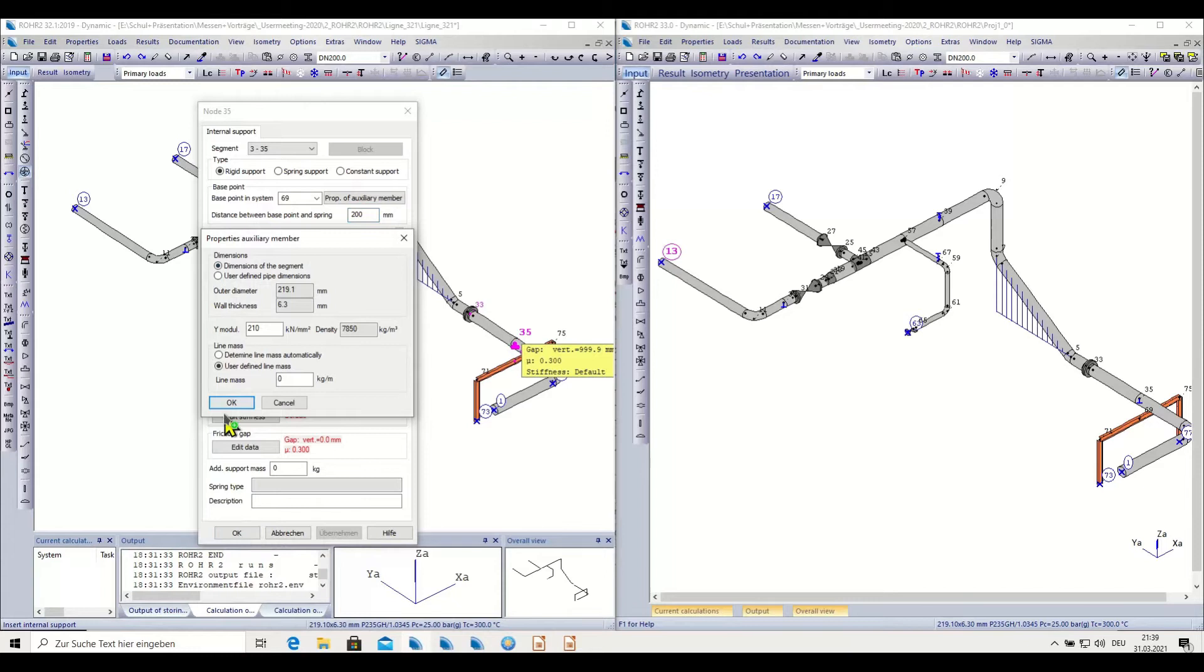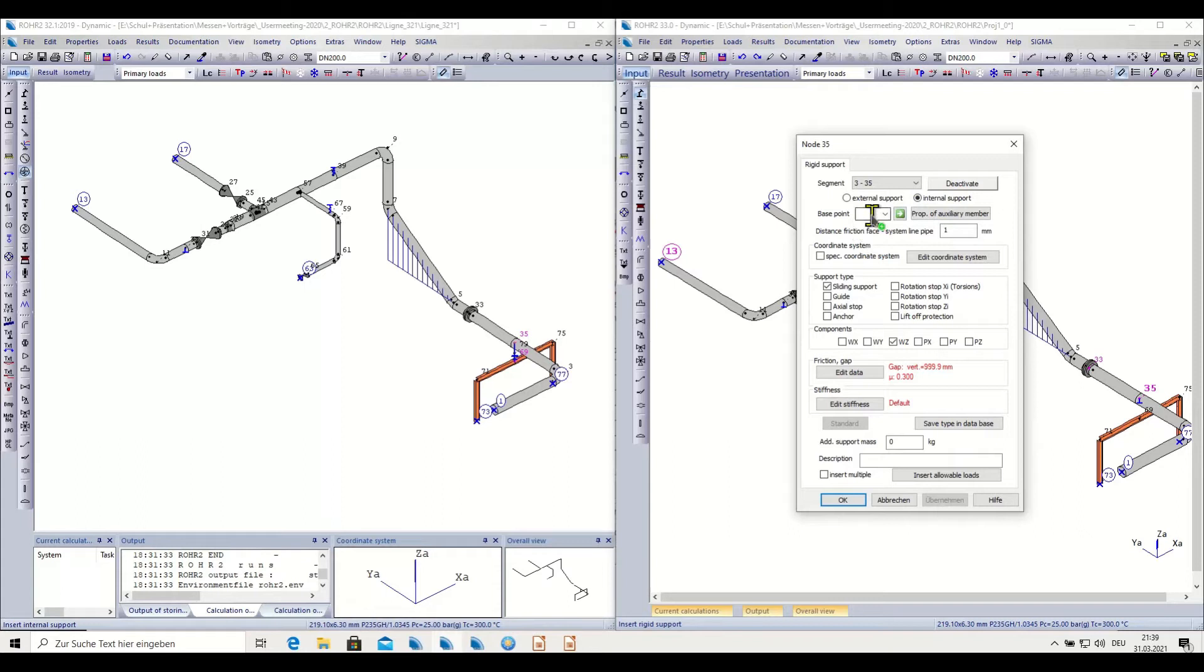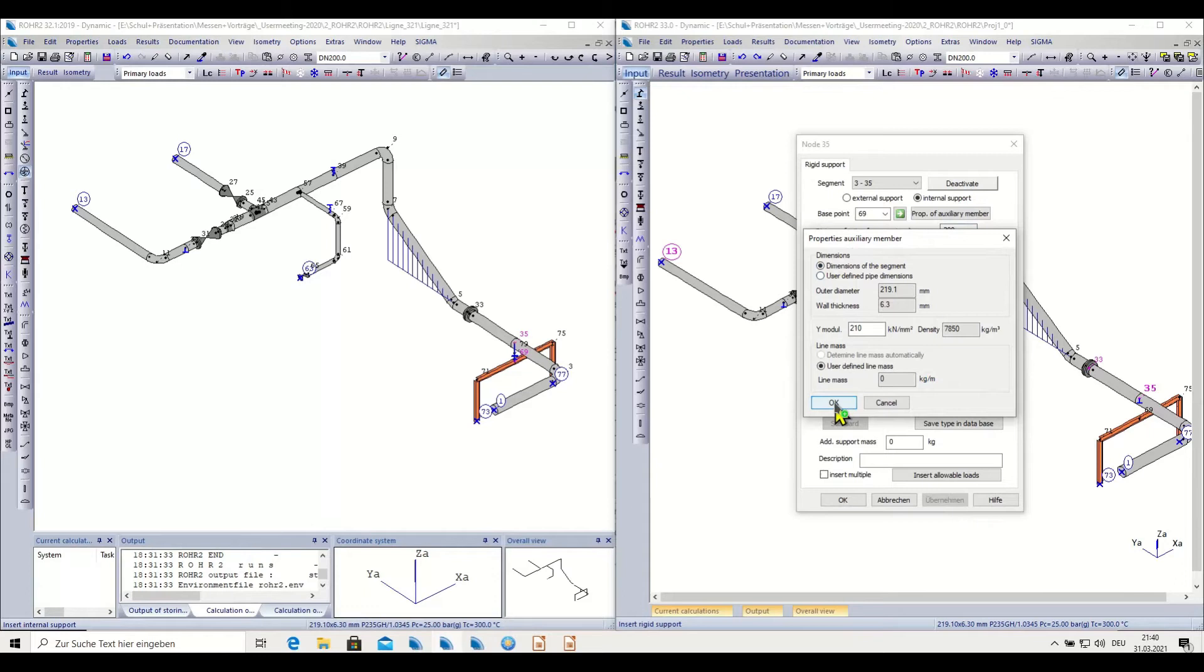In the 33.0 version, I would use the rigid support, click on the rigid support, choose the internal support function here. Now I get the additional question about the base point. I again enter 69 and specify the distance of the sliding position here, and keep the slide support. Again, the question about the auxiliary members—I will just confirm with the dimensions of the pipe.